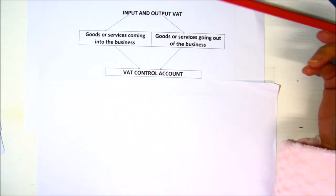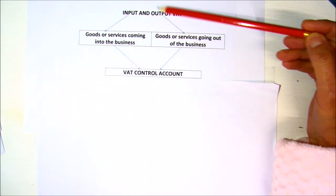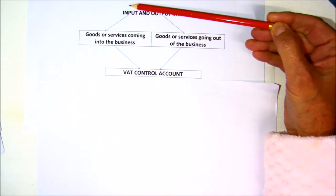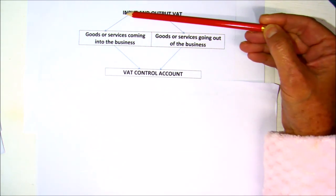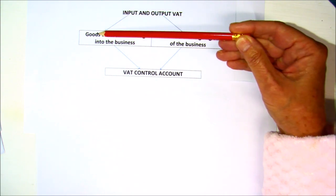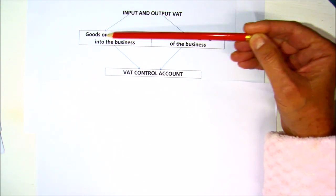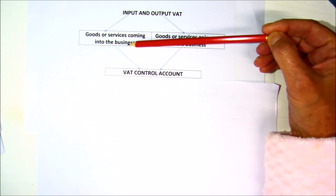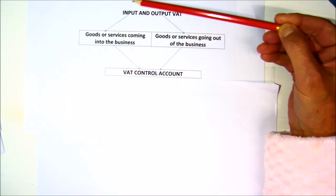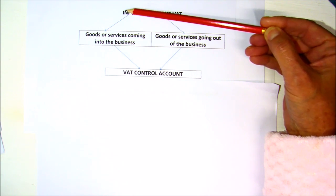In this next lesson on VAT, I want to look at the difference between input and output VAT. Input VAT is the VAT that you as a business would have paid on all your goods or services that are coming into the business. The goods are coming in, and that's why it's called input VAT.